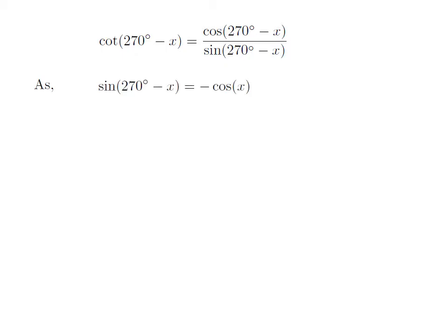We know the trigonometric identity: sine of 270 degrees minus x is equal to minus cosine of x. The proof of this identity has been explained in the video appearing in the upper right corner, and the URL has been mentioned in the description section as well.